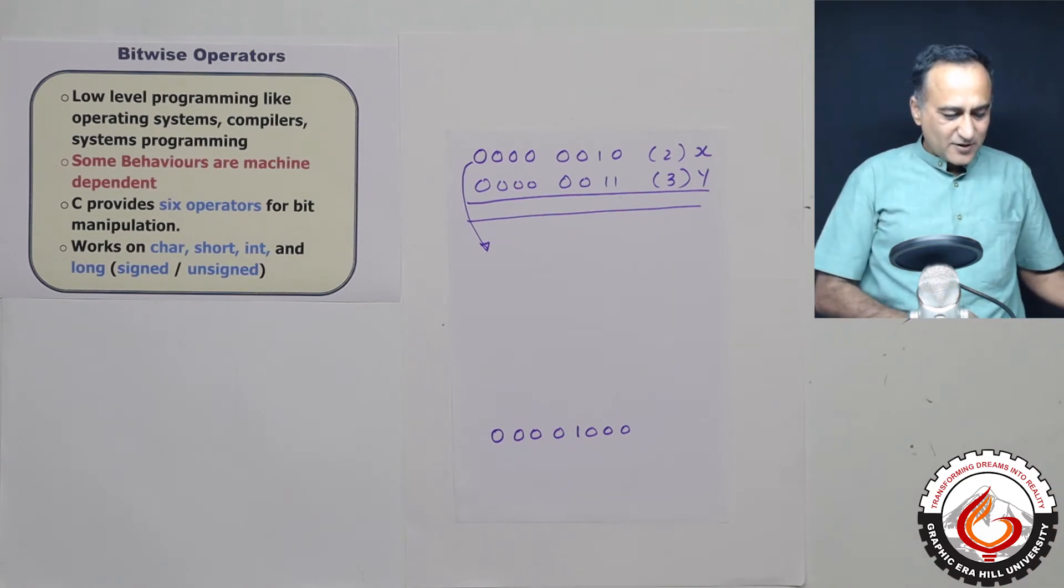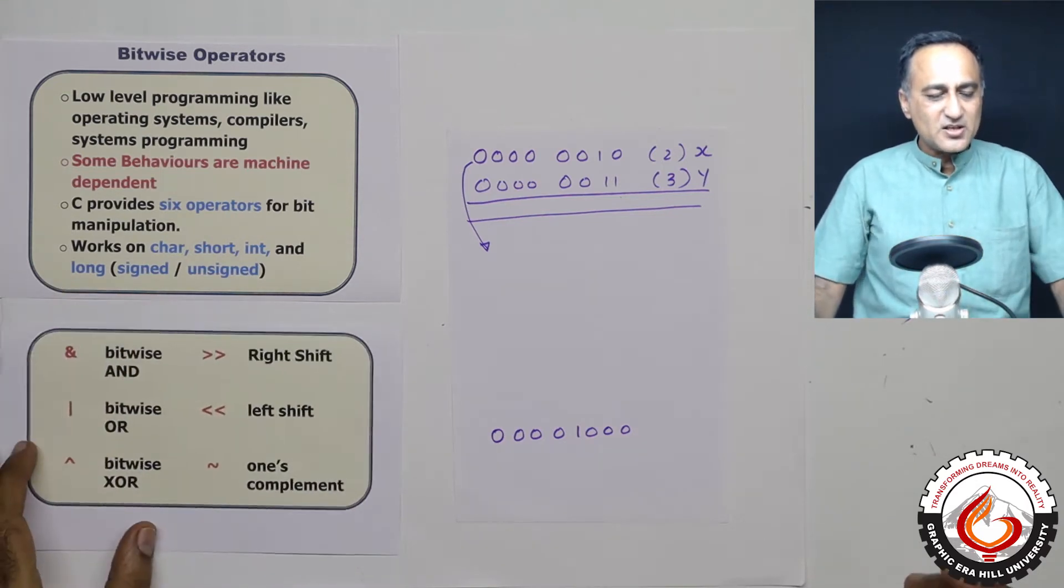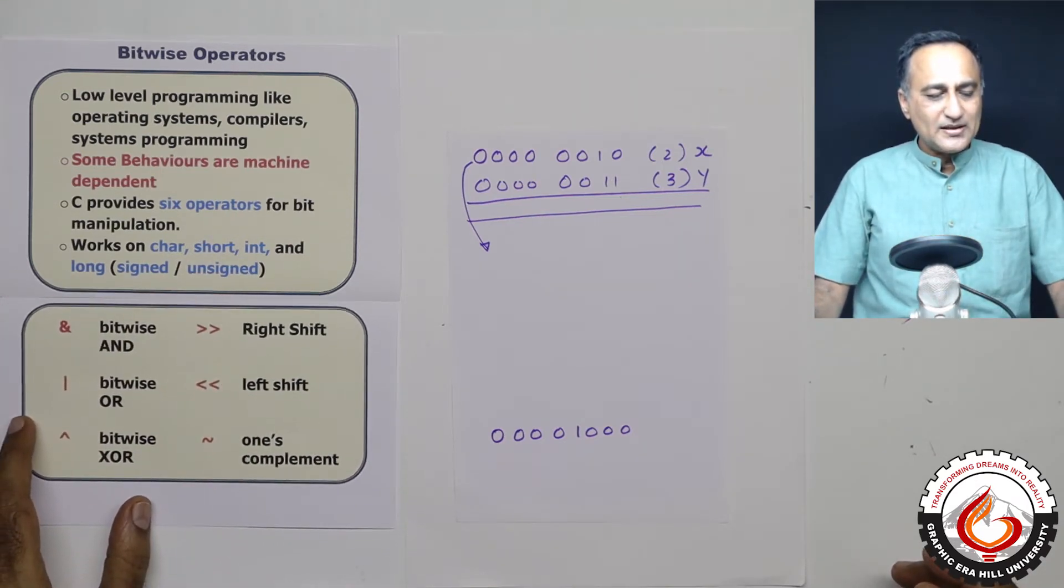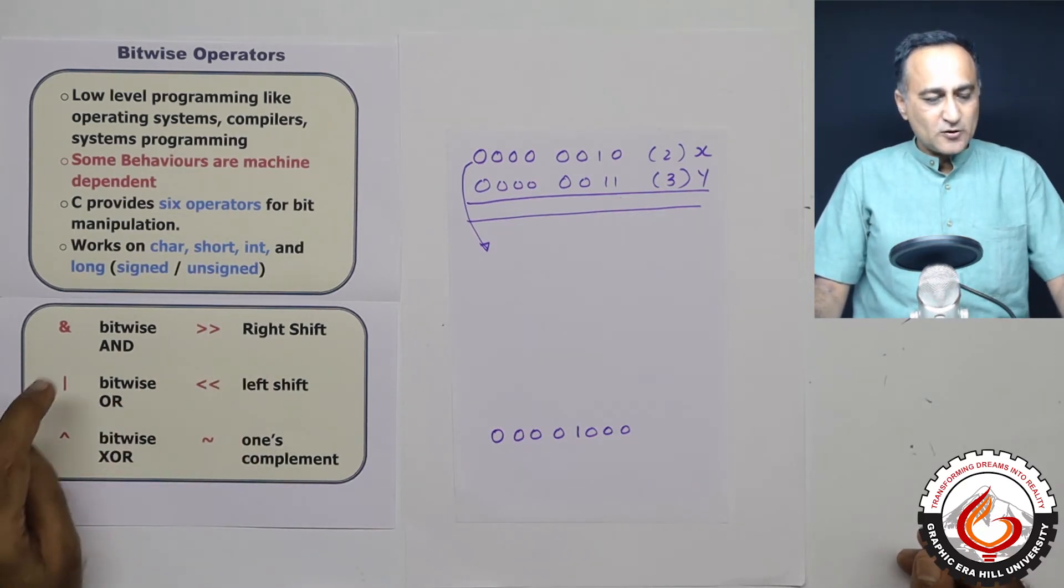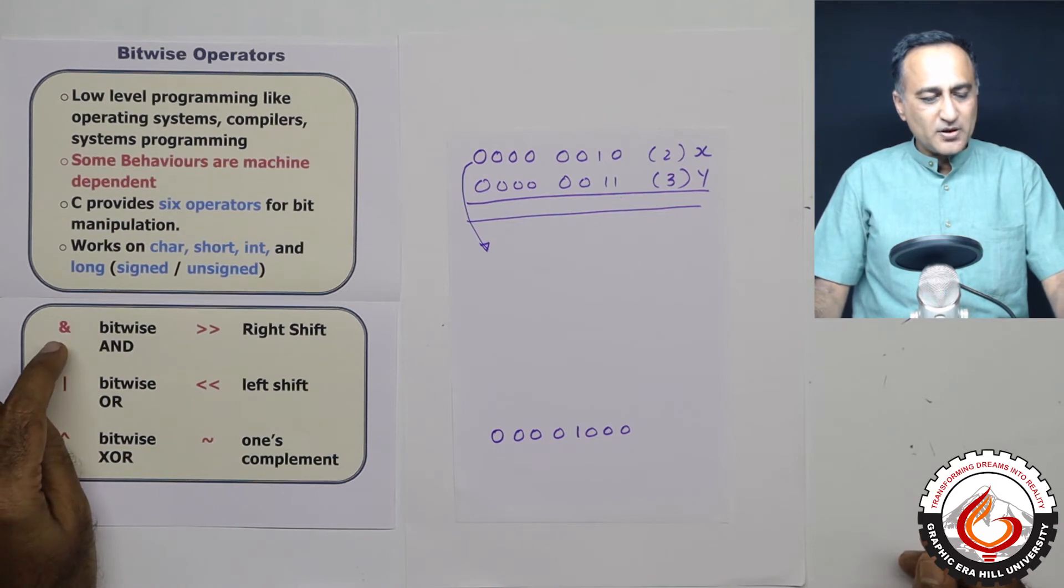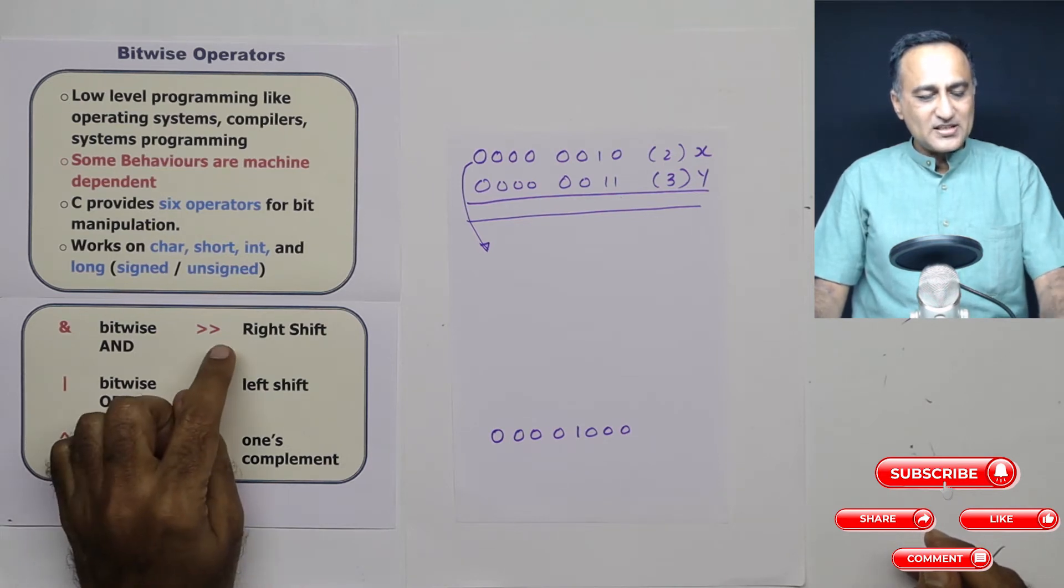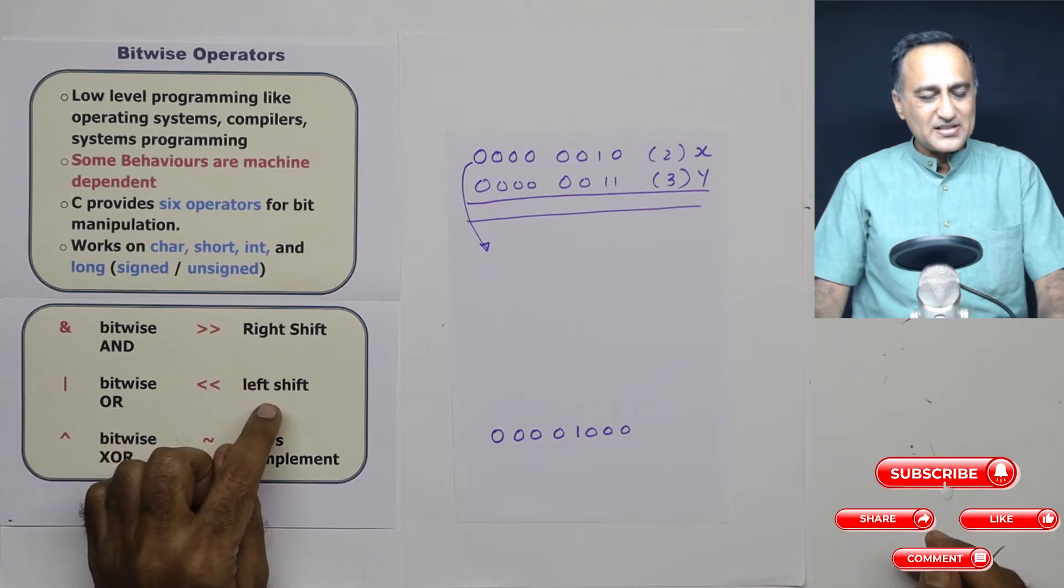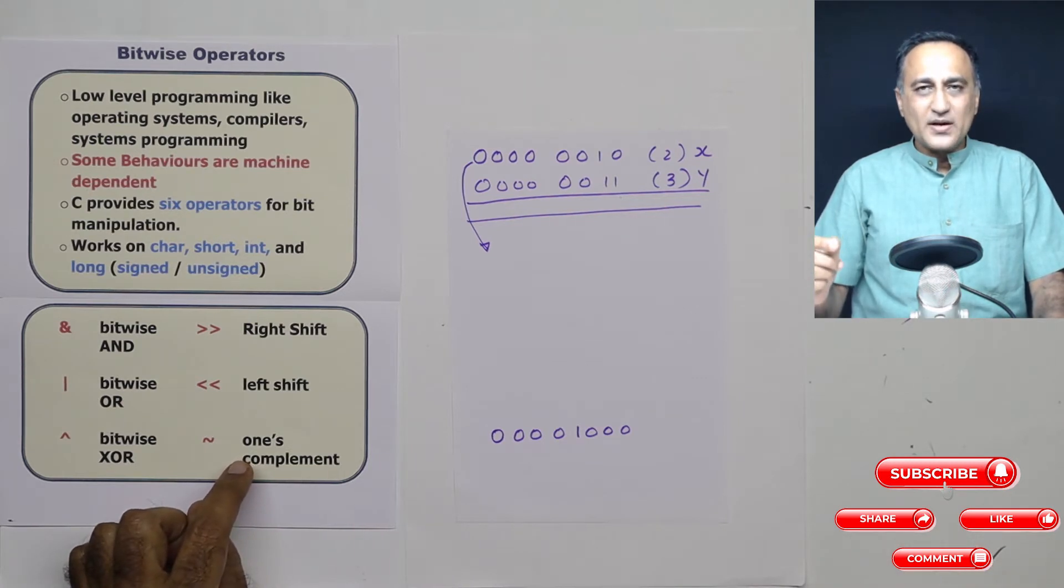Let's take a look at the different bitwise operators in C. We'll discuss the right shift and left shift bitwise operators. First is the bitwise AND, bitwise OR, and bitwise exclusive OR or XOR. This is the bitwise right shift, bitwise left shift, and this stands for the one's complement. One's complement makes ones as zeros and zeros as ones.